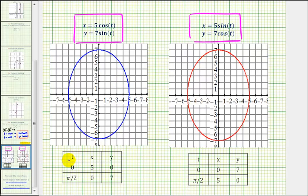when t is 0 using these two equations, x is 5 and y is 0, so we'd be at this point here.